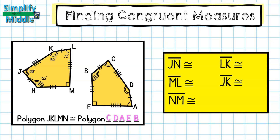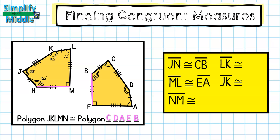Now I'll do congruency statements for line segments using the markings. Line segment JN is congruent to CB. ML has five markings, so it is congruent to EA. NM has three markings, so it is congruent to BE. Line segment LK has one marking, so it is congruent to line segment CD.